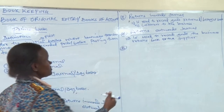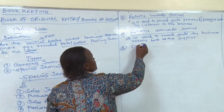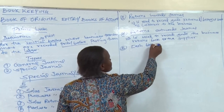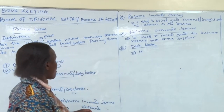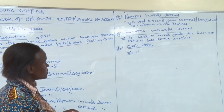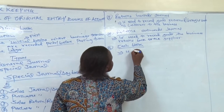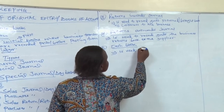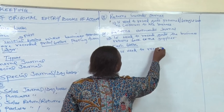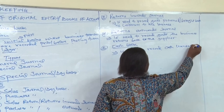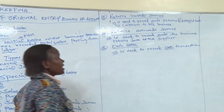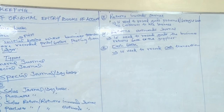We have already learned about the cash book because it is also a journal. The cash book is used to record all transactions which involve cash — only cash transactions. The other four journals are used to record credit transactions, but the cash book records cash transactions.